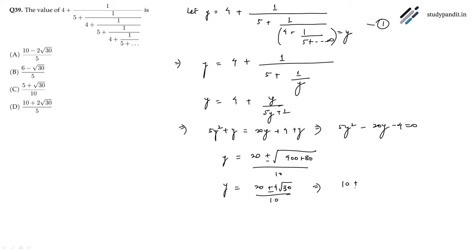So this is 10 plus minus 2 root 30 divided by 5. As we can see that the value of y cannot be negative, so y will be 10 plus 2 root 30 divided by 5.